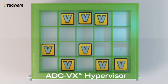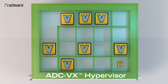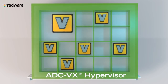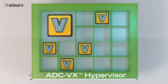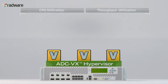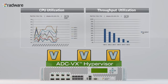ADC-VX enables scaling on demand the entire device throughput, the number of VADCs, and the capacity of each VADC instance. With a centralized management system and dashboard that provides a real-time view of the VADC instances' health and resource utilization, ADC-VX is simple to manage and operate.